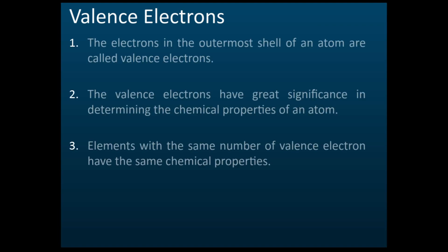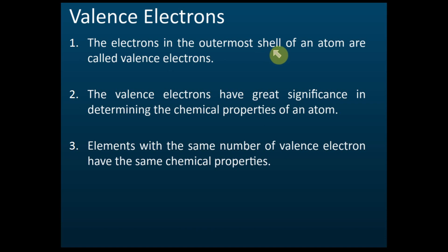A valence electron is the electron in the outermost shell — not really the last shell, but the outermost shell. This valence electron has great significance because it determines the chemical properties. If atoms have the same number of valence electrons, their chemical properties will be the same.